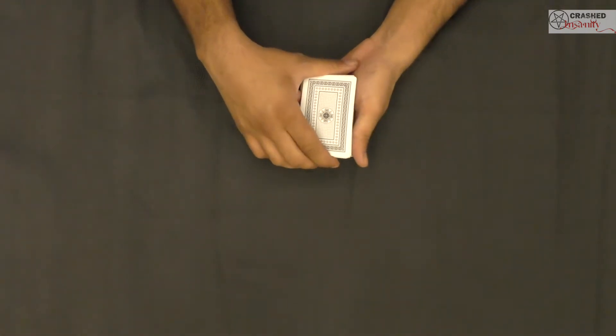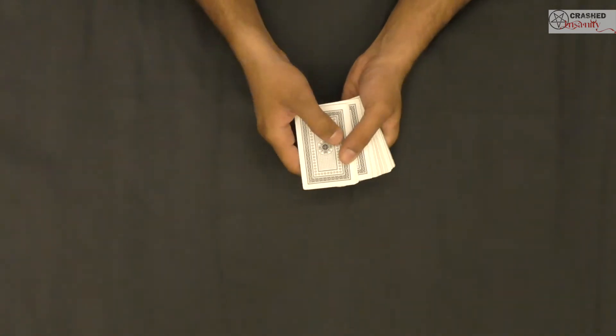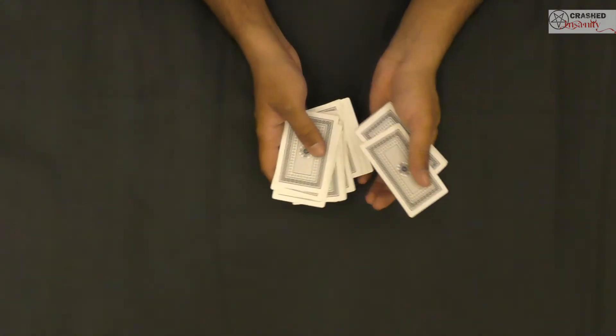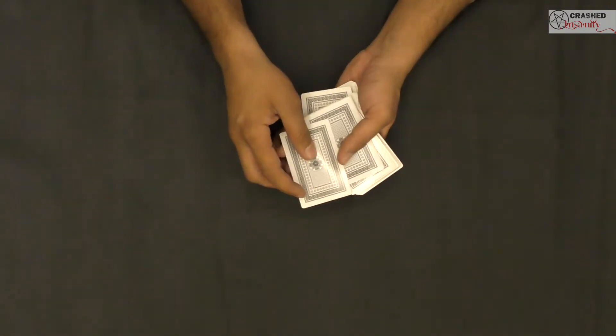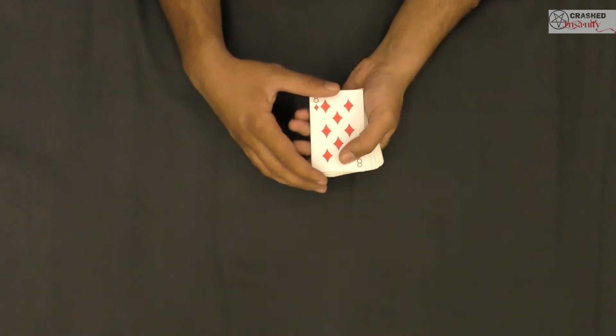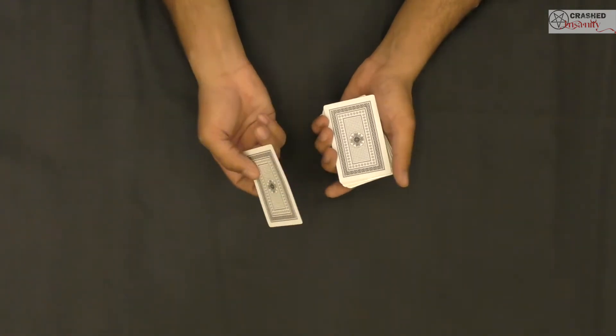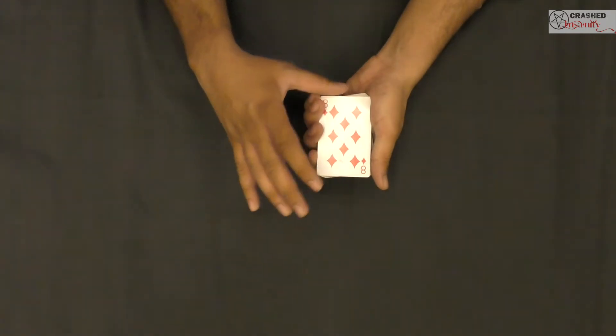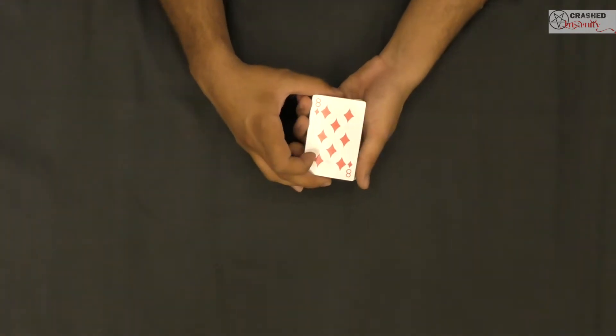After giving them a couple of cuts, we'll ask a spectator to pick any card at random. Let's suppose the spectator chooses this card right here, which is the eight of diamonds. All I want you to do is keep the eight of diamonds in your mind, remember this card, and just focus on it.